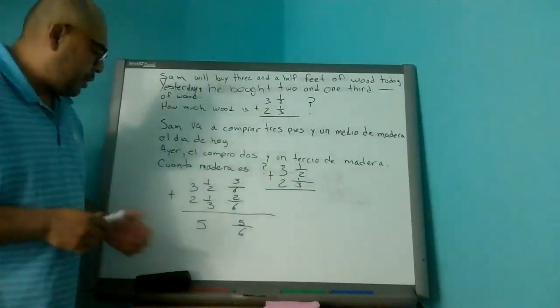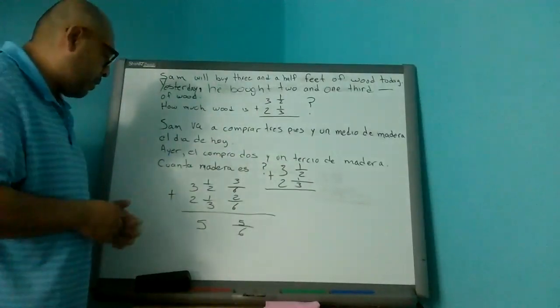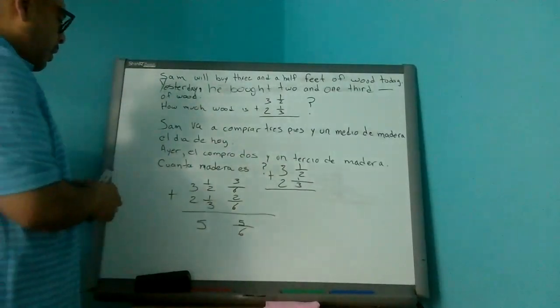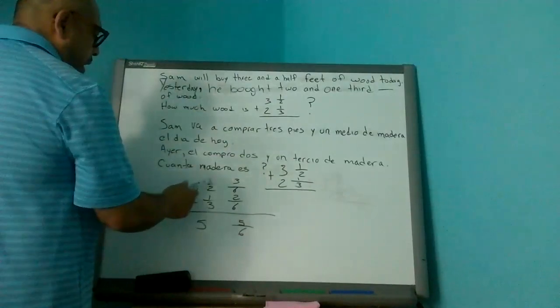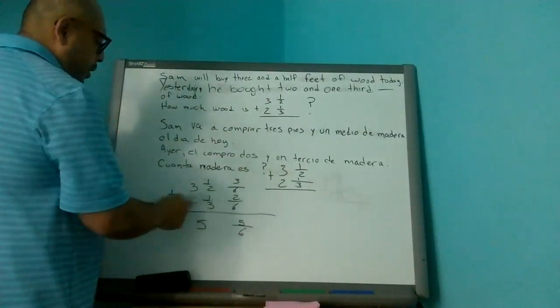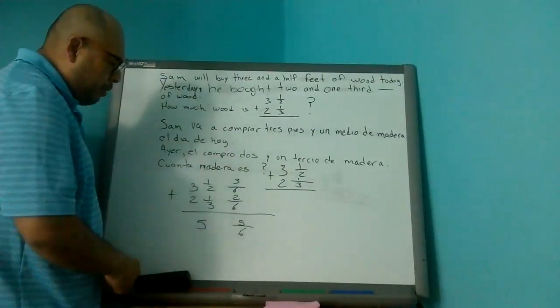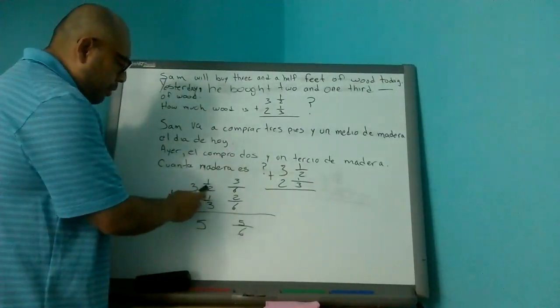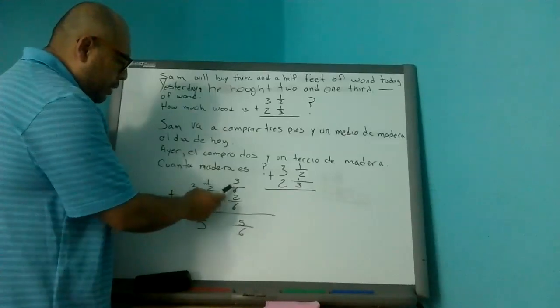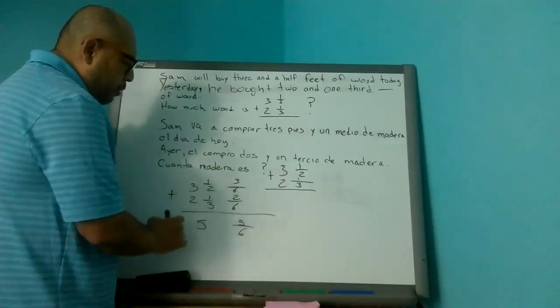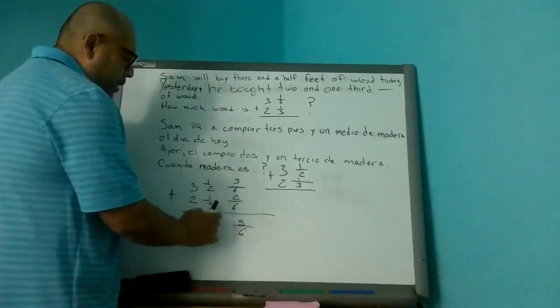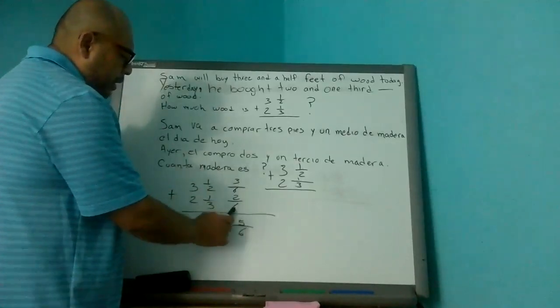Let's see the operation. Vamos a ver la operación. Three and a half plus two and one third. First of all, we're going to find a common denominator. Multiplying three times two. Three times two is six. And we find that six as a common denominator. We bring six down here.